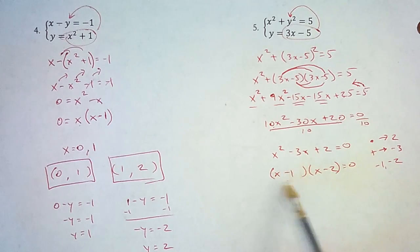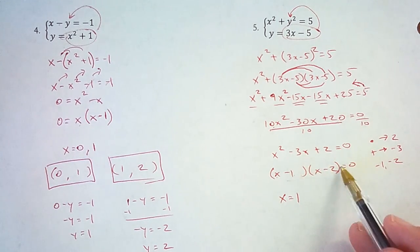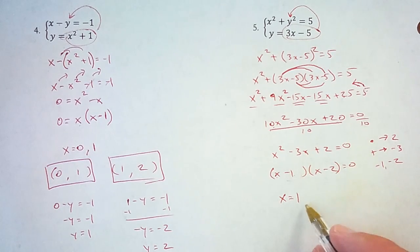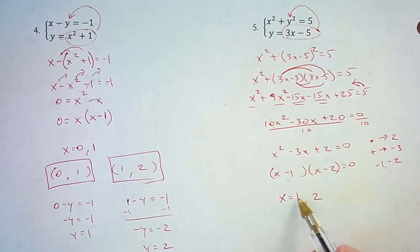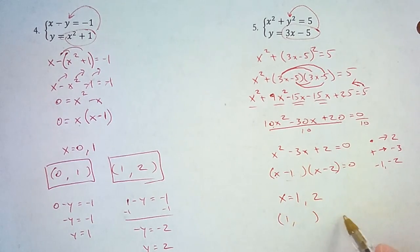Now what value of x would make this factor equal to 0? Well, 1 minus 1 makes 0. So x equals 1 is one value of x. And what value of x would make this factor equal to 0? 2 minus 2 would equal 0. So 2 is the other value of x. So there's two solutions. One of them has x being 1, and the other has x being 2.